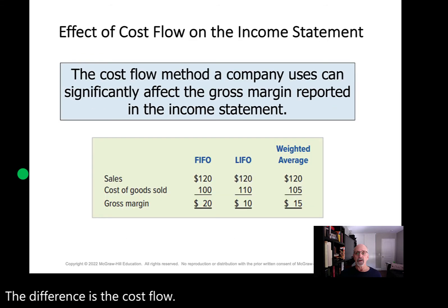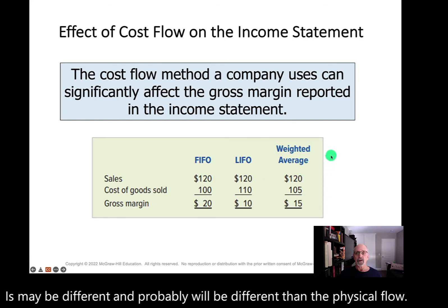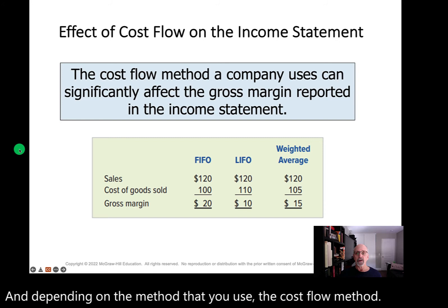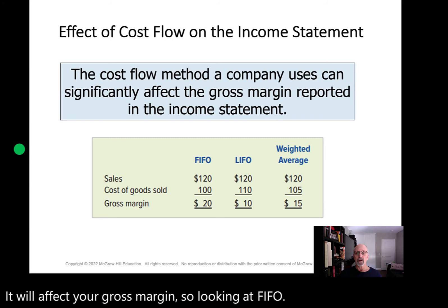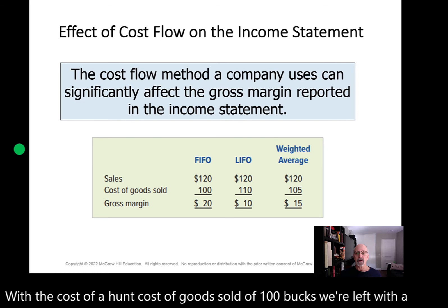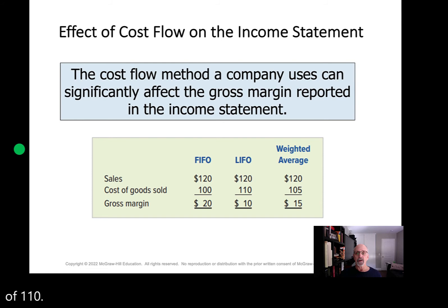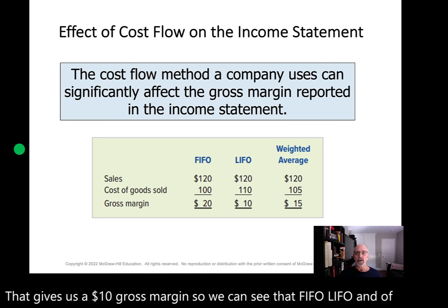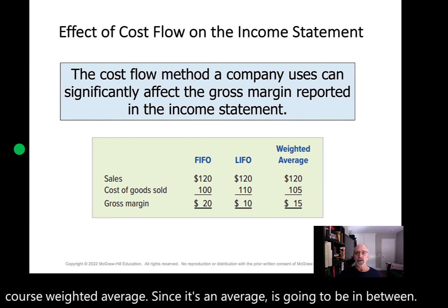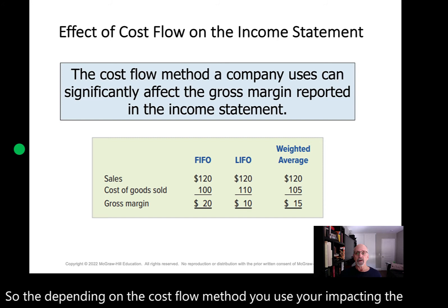Depending on the cost flow method that you use, it will affect your gross margin. Looking at FIFO, with a cost of goods sold of $100, we're left with a gross margin of $20. However, under LIFO, since we're using a COGS of $110, that gives us a $10 gross margin. So we can see that FIFO, LIFO, and weighted average — since it's an average — is going to be in between. Depending on the cost flow method you use, you're impacting the gross margin which will, all things being equal, affect net income as well.